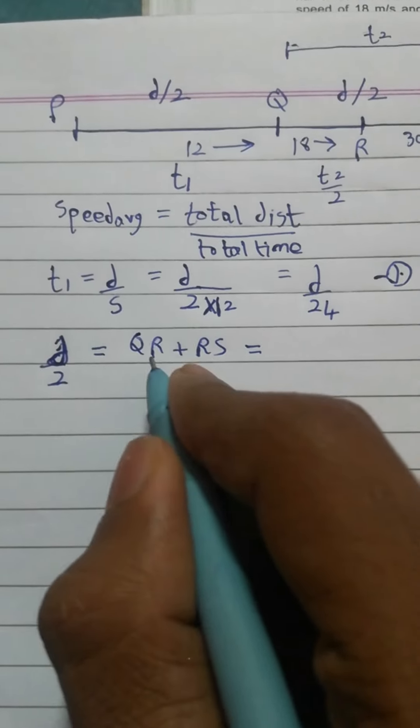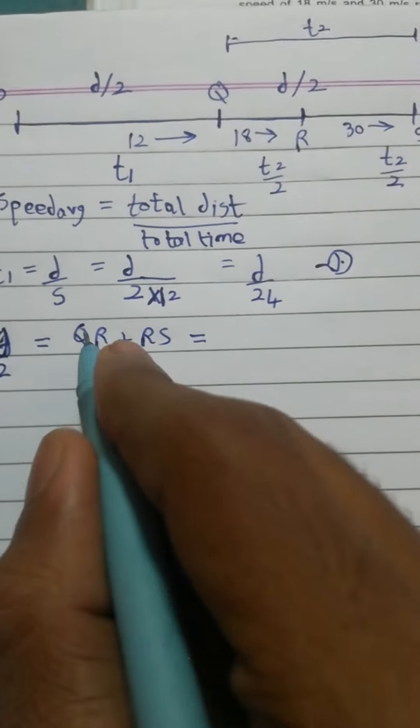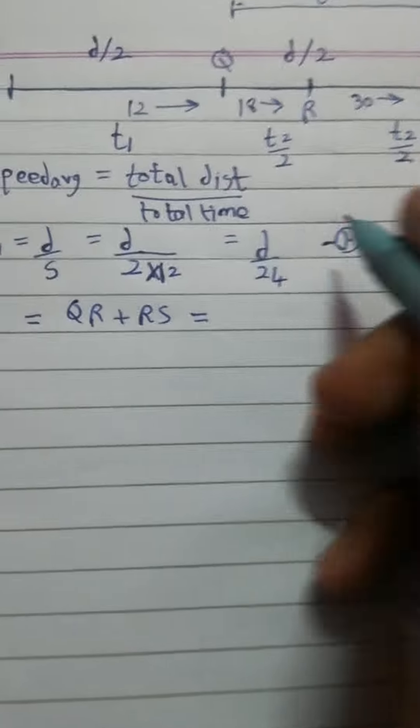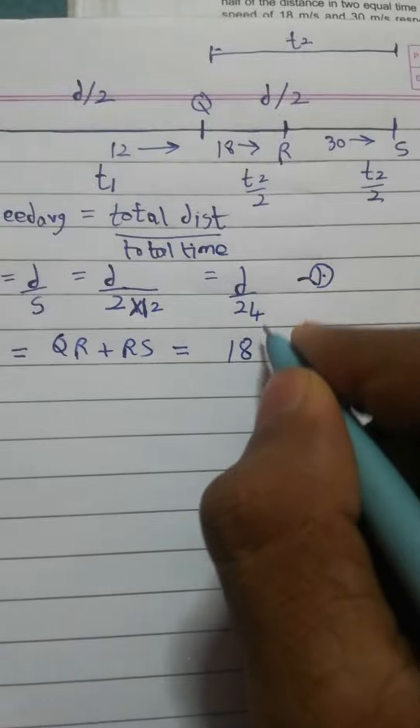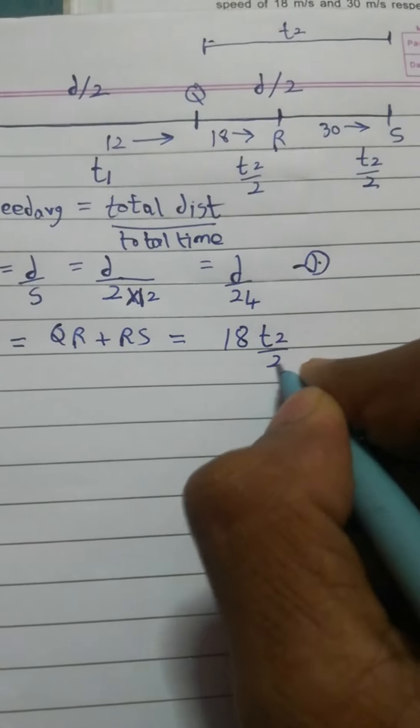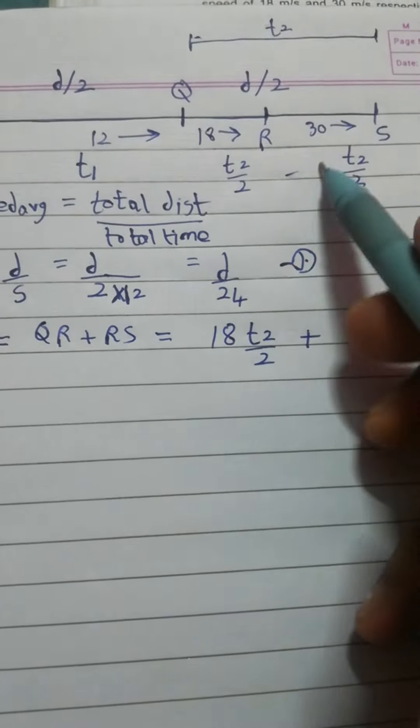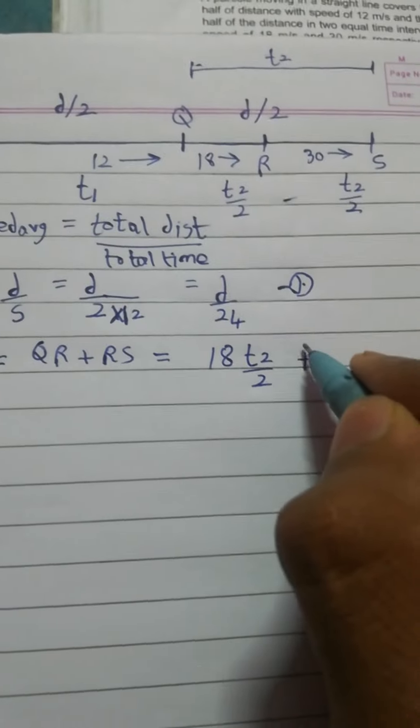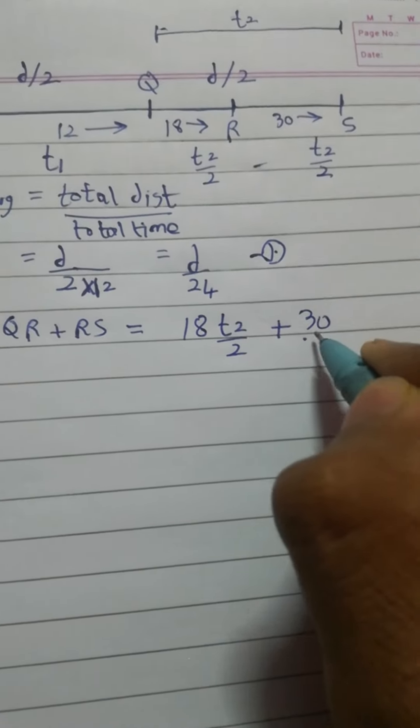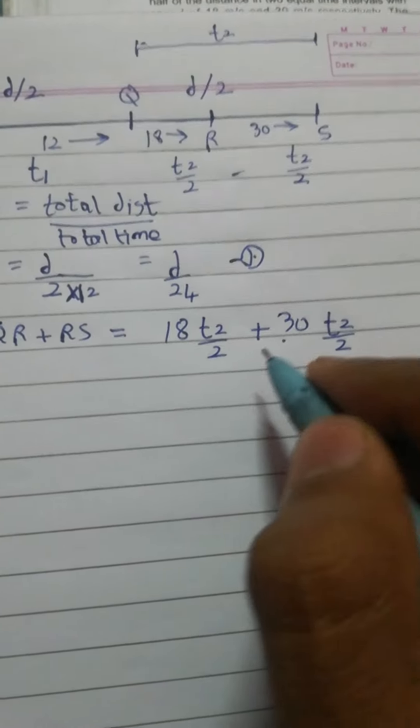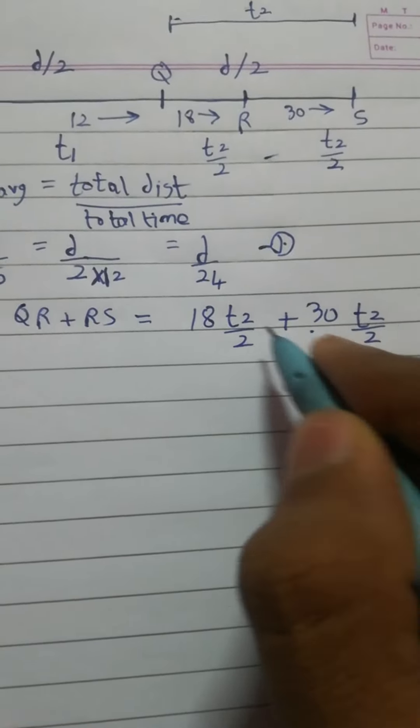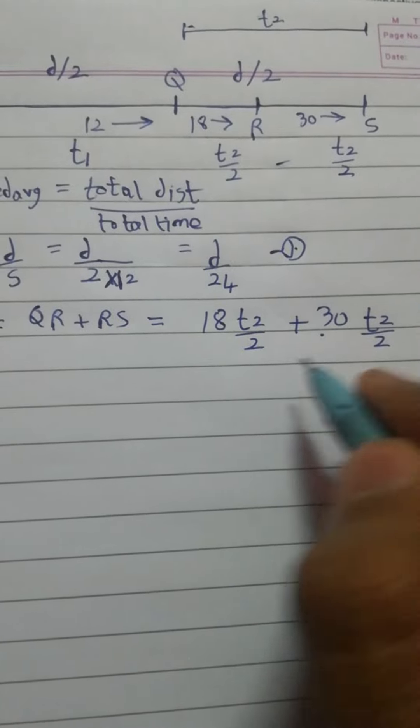So it would be just Ut. So what is initial velocity here? 18. So 18 into time, and we have considered time as T2 by 2, so T2 by 2 plus RS. What is initial velocity? 30. So 30 into T2 by 2.